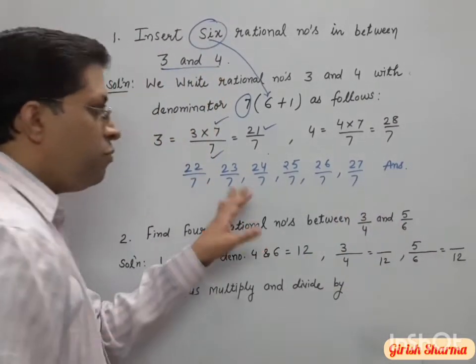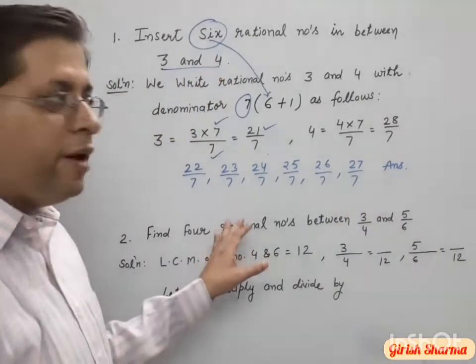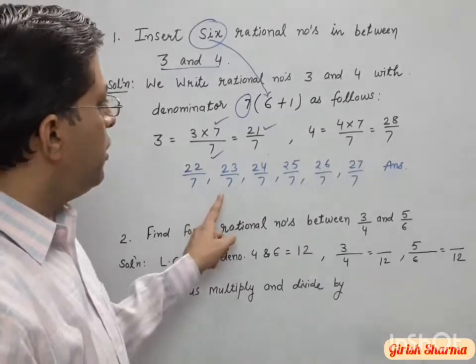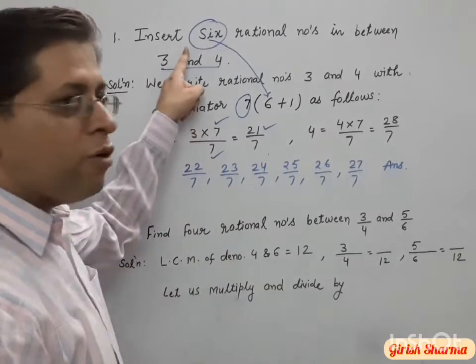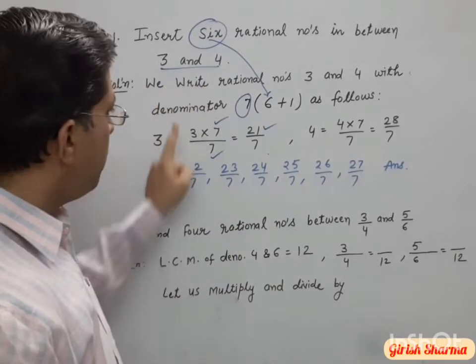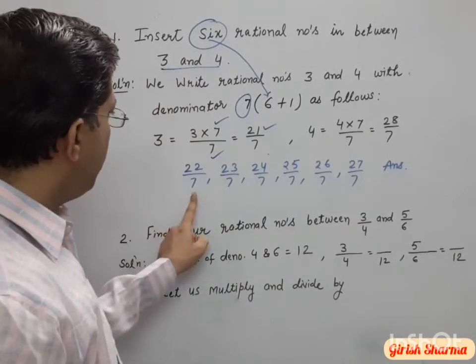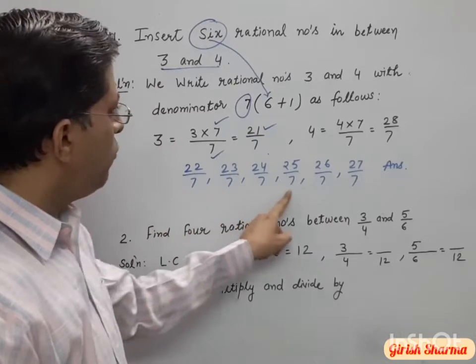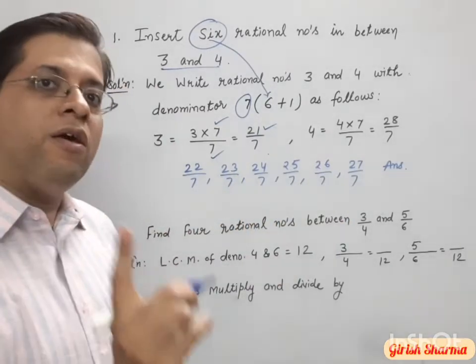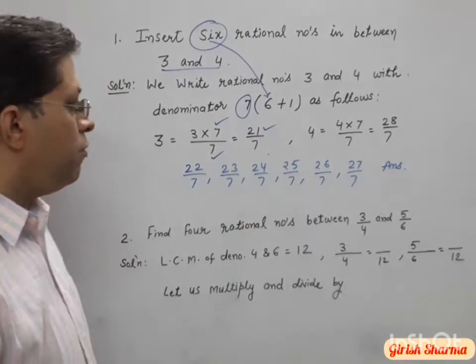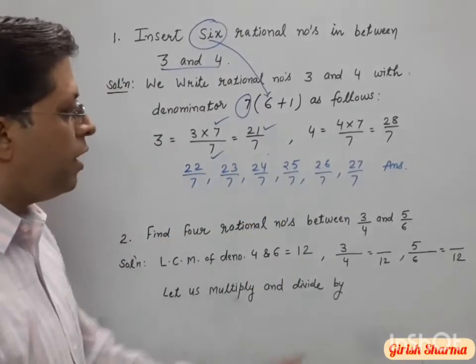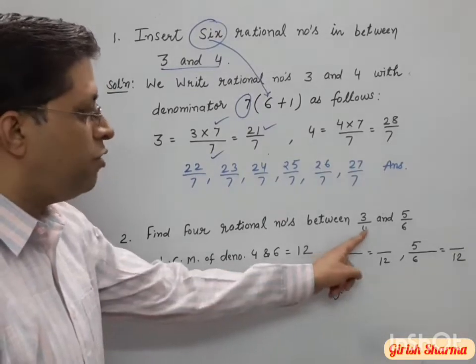Using this method you get exactly the numbers you want. You wanted 6 rational numbers — see here: one, two, three, four, five, six. Now let's do another example where the numbers are given as fractions.